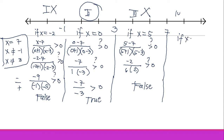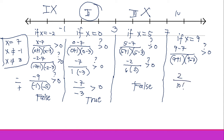Testing Region 4, let x equal 9. We get (9 minus 7) over (9 plus 1)(9 minus 3) equals 2 over (10)(6) equals 2 over 60, which is positive. That is greater than zero, so this is true — Region 4 is part of our solution.